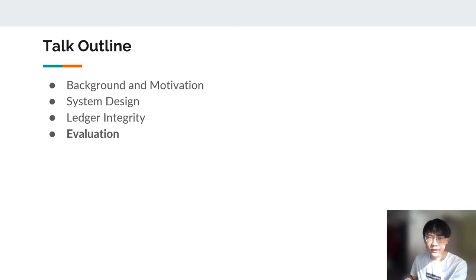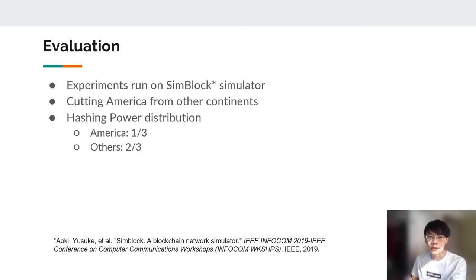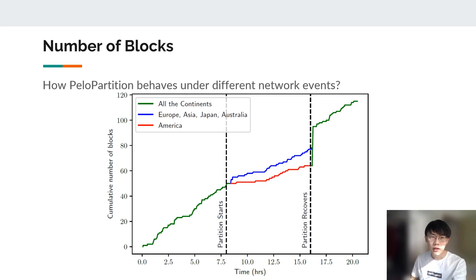Lastly, we will have the evaluation section. To evaluate the performance of PeloPartition, we run experiments on a blockchain simulator called SimBlock. We cut down the connections between America and other continents. So there are two regions. America has one third of the total hash power, while the others has two thirds. First, we will show how PeloPartition behaves on the different events. The x-axis here is a time series. Network partitions happen around 8 hours, while it recovers after around 16 hours. The y-axis shows the number of blocks of each branch. We can see that the main chain split into two after partitions. The growing rate of America, the red line is half of the rate of the others. After network recovers, the two branches merge into one, and the new blocks generated in both branches are included in the main chain.